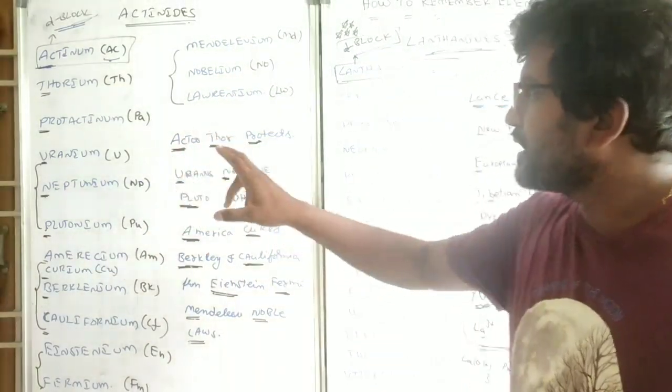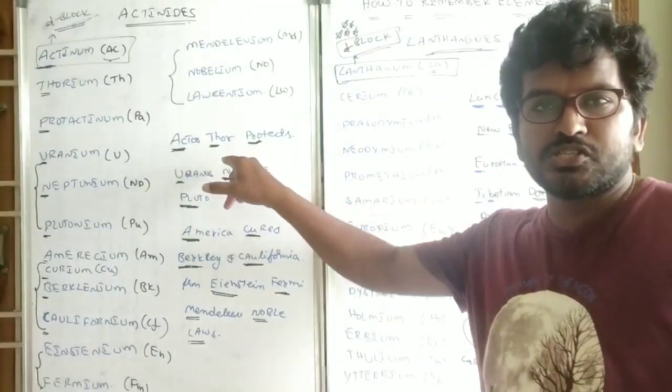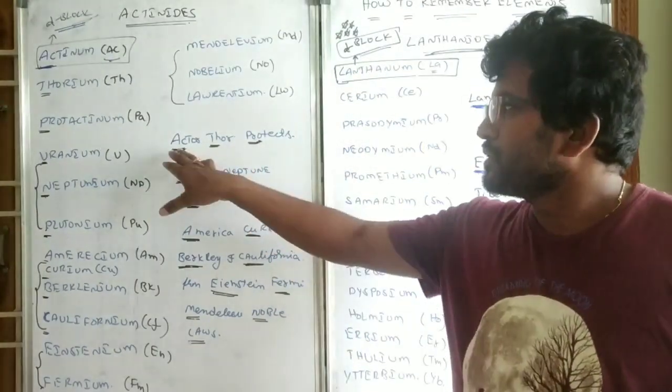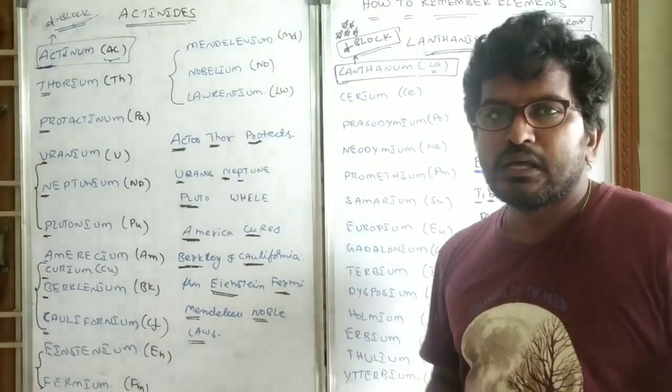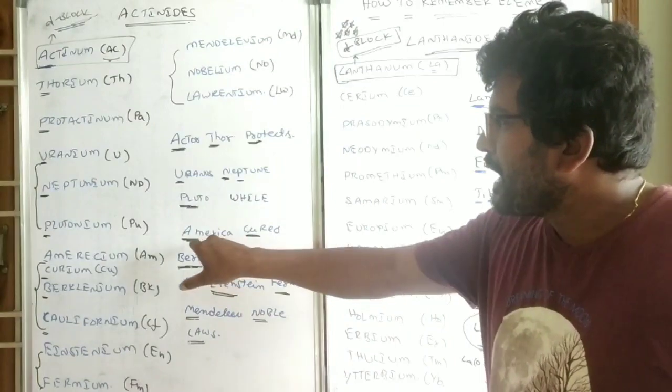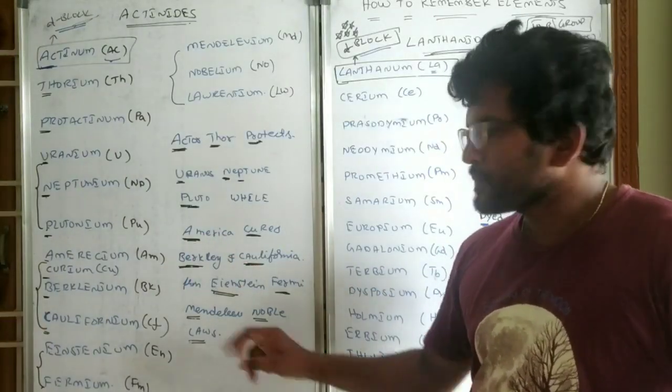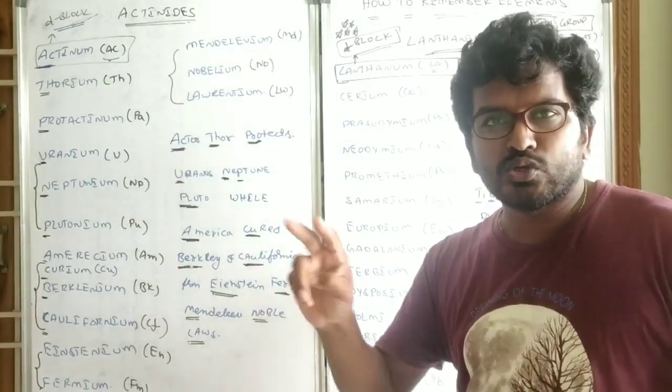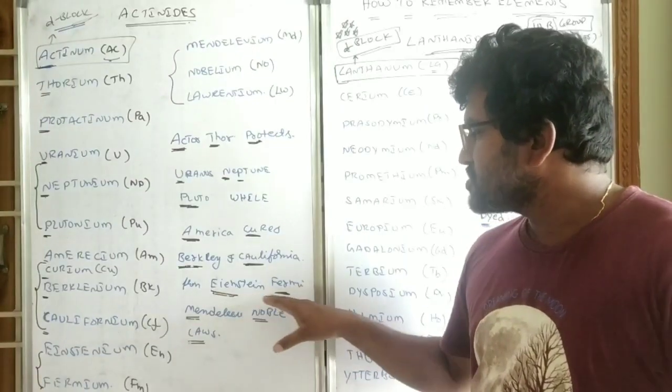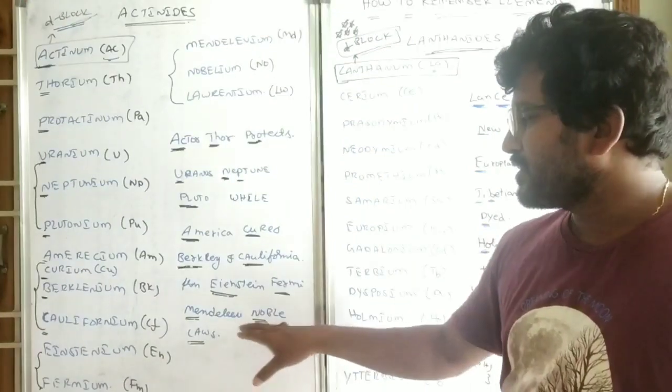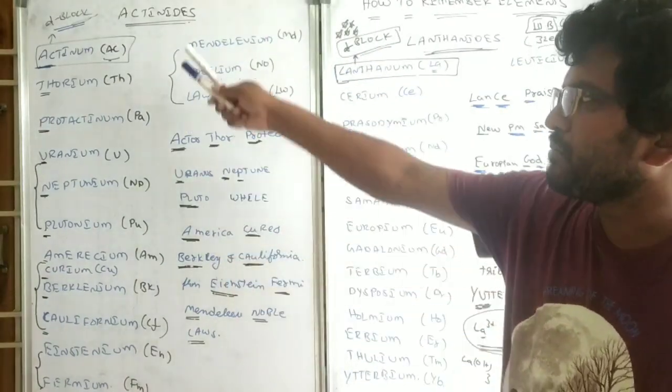For these actinide elements, the mnemonic I have created is: Actor Thor protects Uranus, Neptune, Pluto. Actor Thor, you know very well who is Thor, a marvelous hero, the thunder god. This actor Thor protects Uranus, Neptune, Pluto. So Thor is protecting the three planets: Uranus, Neptune and Pluto. So Thor is protecting these three planets. At the same time, America cures. America is trying to recover those who are sick. America cures americium, curium. Berkeley and California are the two cities in the USA. Berkeley and California from whom is America curing? From Einstein, Fermi, Mendeleev, Nobel laws. Einstein, Fermi, Mendeleev and Nobel laws because of whom these cities became sick, America is curing them. Like this you can remember the actinide series.